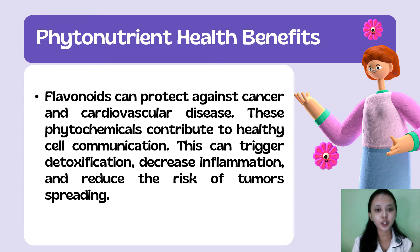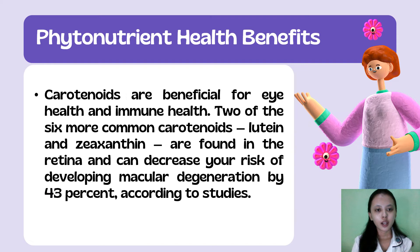In flavonoids — they can protect against cancer and cardiovascular disease. These phytochemicals contribute to healthy cell communication, trigger detoxification, decrease inflammation, and reduce the risk of tumor spreading. Carotenoids are beneficial for eye health and immune health. Two of the common carotenoids, lutein and zeaxanthin, are found in the retina and can decrease your risk of developing macular degeneration by 43% according to studies.